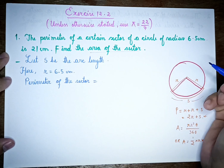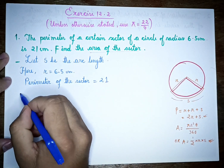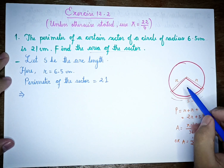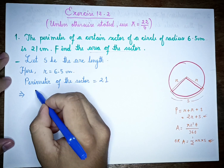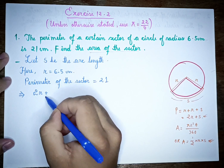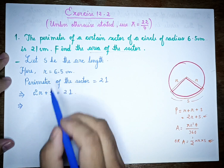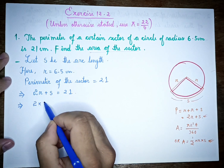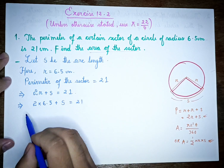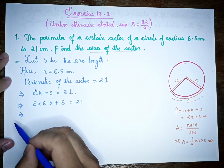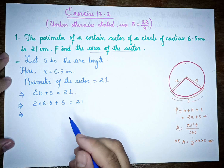The perimeter of the sector is 21 cm. The radius R is 6.5 cm. So we have 21 equals 2 times 6.5 plus S, which gives us S equals 21 minus 13, so S equals 8 cm.